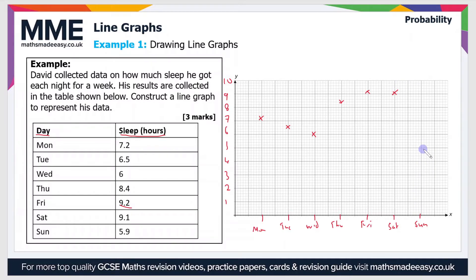And then Sunday is the smallest amount of sleep. That's 5.9, so that's this point up here.